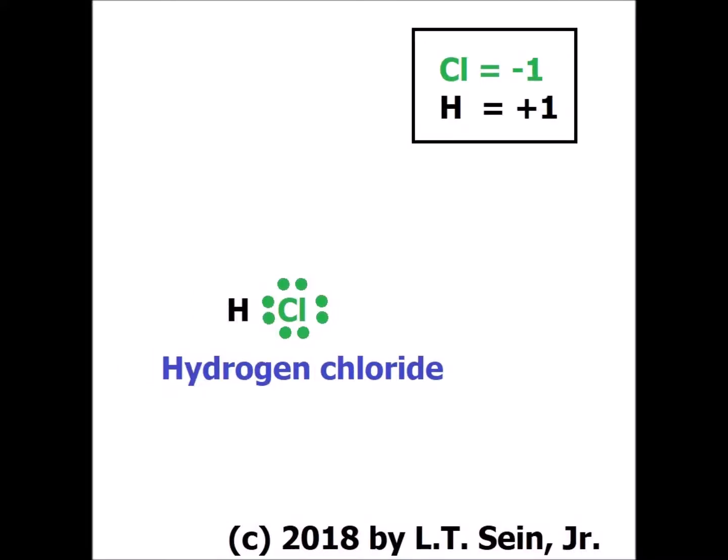In the compound hydrogen chloride, each chlorine brings in seven valence electrons and hydrogen brings in one valence electron. We can satisfy the duet rule for hydrogen and the octet rule for chlorine by having a single hydrogen-chlorine bond. Because chlorine is one of the most electronegative elements — more electronegative than hydrogen — the two electrons in the hydrogen-chlorine bond are counted towards chlorine. So chlorine started with seven electrons, now it has eight, giving it a net gain of one electron and an oxidation number of minus one.